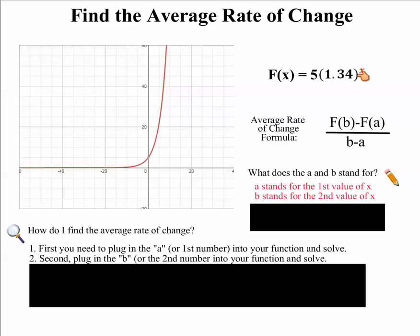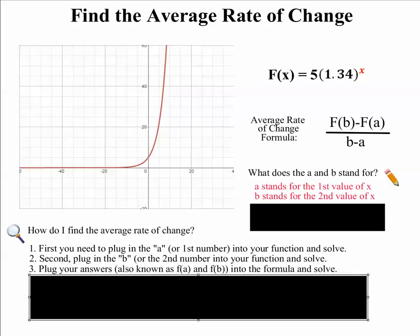So plug it in right here and solve, remember order of operations. And then the third is to take all of that that you just figured out and plug it into the formula. So the answer that you got for F(b) you plug in here, the answer that you got for F(a) you plug in here, and then the numbers they gave you in the problem, the second number goes here and the first number goes here. So let me show you what that looks like on the next page.